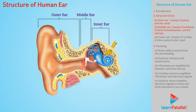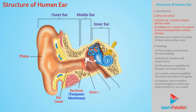The outer ear consists of the pinna and ear canal. The middle ear consists of the eardrum, or tympanic membrane, and three bones: the hammer, anvil, and stirrup.